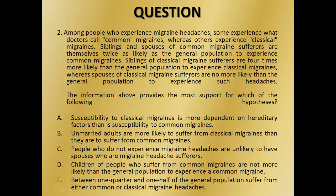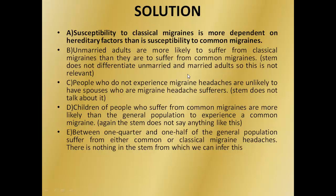Let's move on to the second question. Among people who experience migraine headaches, some experience what doctors call common migraines whereas others experience classical migraines. Siblings and spouses of common migraine sufferers are themselves twice as likely as the general population to experience common migraines. Siblings of classical migraine sufferers are four times more likely than the general population to experience classical migraines, whereas spouses of classical migraine sufferers are no more likely than the general population to experience such headaches. The information above provides the most support for which of the following hypotheses?